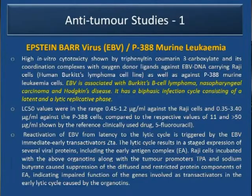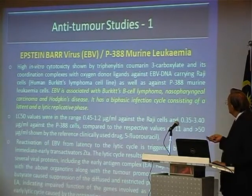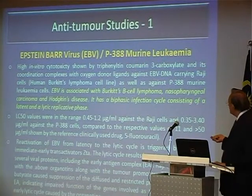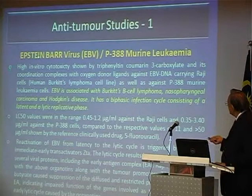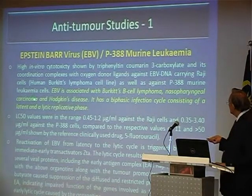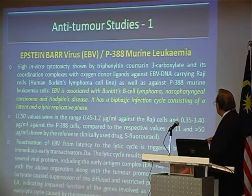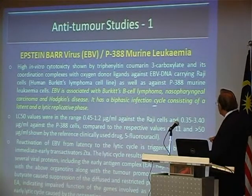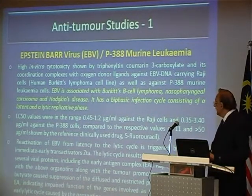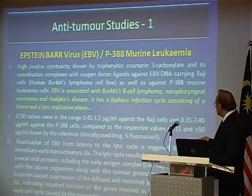The anti-tumor studies — we are almost at the end. We looked at the Epstein-Barr virus and also murine leukemia in mice. Epstein-Barr virus is associated with B-cell lymphoma, nasopharyngeal carcinoma — that's why our interest was there — and Hodgkin's disease. The virus itself has two cycles, a biphasic infection cycle: a latent stage where nothing happens, and then a lytic replicative phase when it exerts its effect.